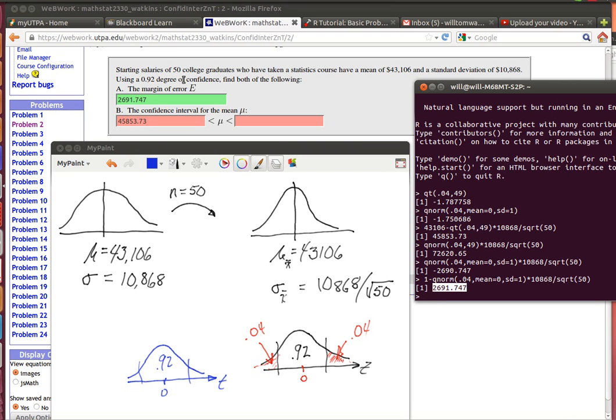This is problem 2 from one of the homework sets. We're looking for a confidence interval. We know that the mean is 43,106 and the standard deviation is also given. We're looking for the 92nd percent degree of confidence.